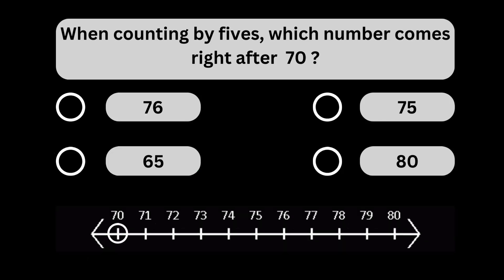When counting by fives, which number comes right after 70? When counting by fives, the number 75 comes right after 70.